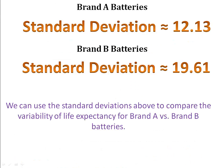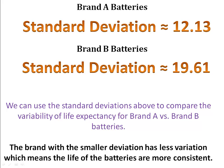So, what does that mean? Well, we can see that brand A has a much smaller standard deviation than brand B. We can use that to compare the variability of their life expectancies. We know that since brand A has a smaller deviation, that brand A has less variation. Because it has less variation, that means that the life expectancy of the batteries is much more consistent.